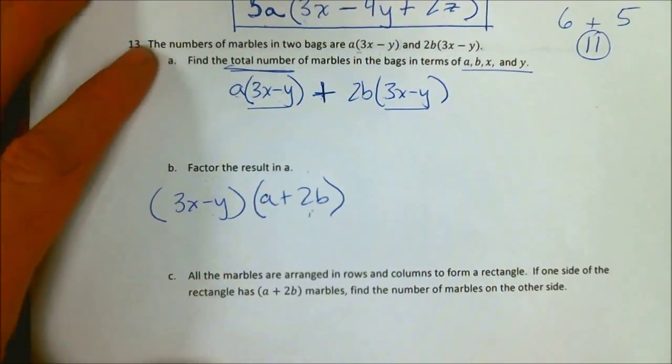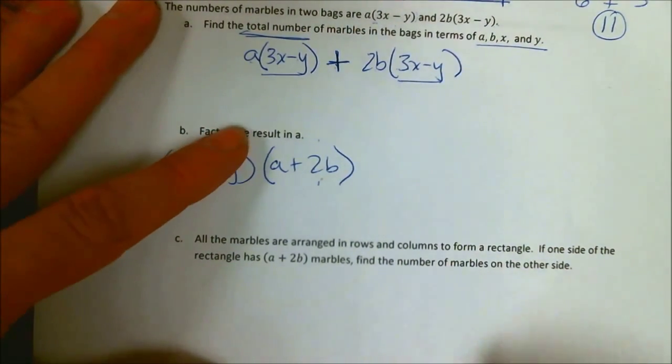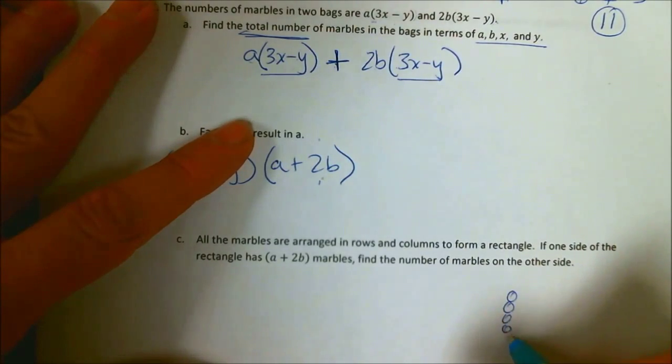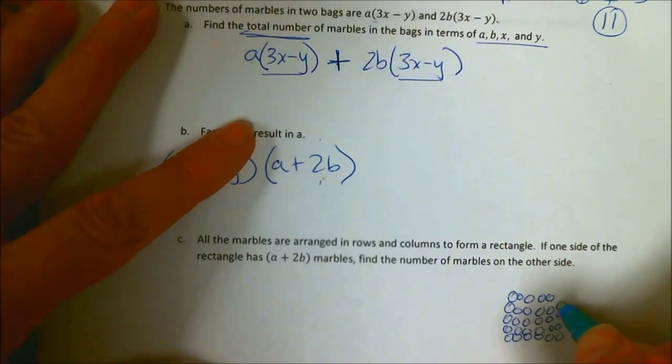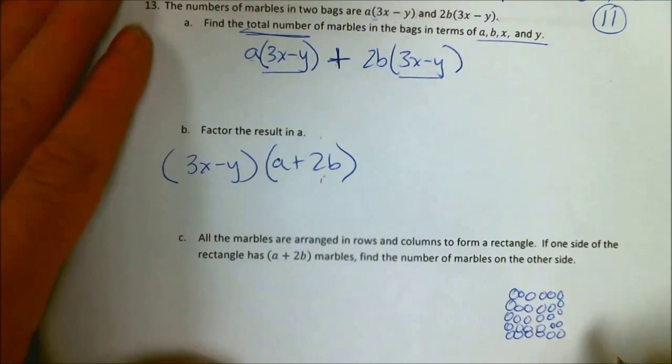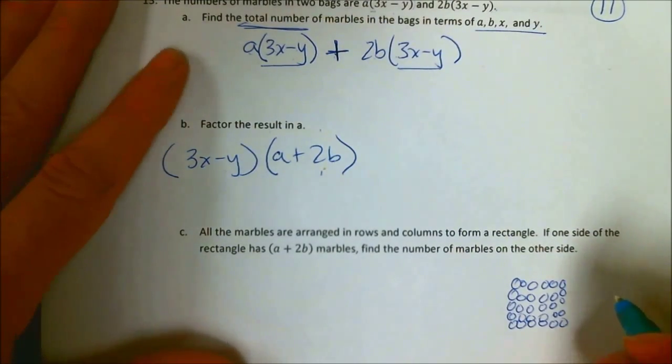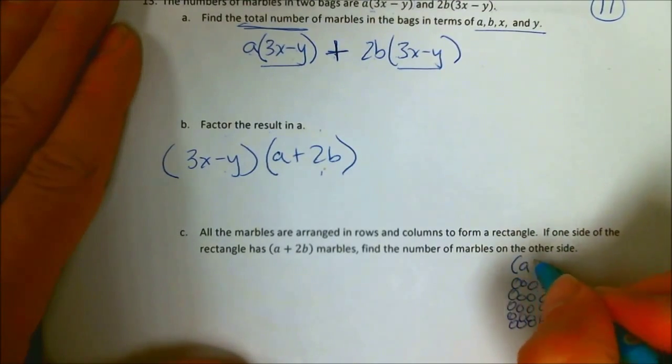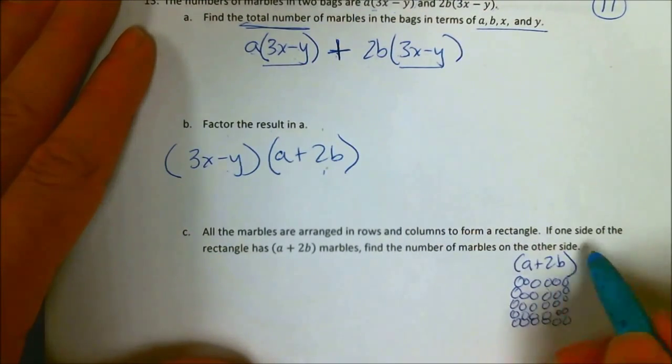Well, that was fun. Let's ask another question. All the marbles are arranged in rows and columns to form a rectangle. So we've got this rectangle. Now it's a square. Now it's a rectangle. Actually, the rectangle and the square are the same thing. A square is a kind of rectangle. I've got rows and columns of marbles, and it forms a rectangle. And it says if one side of the rectangle has A plus 2B marbles, how many marbles are on the other side?